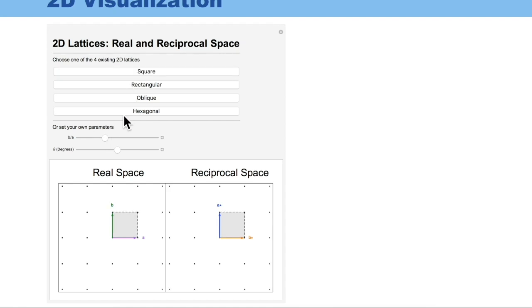As the real unit cell shrinks or expands, the reciprocal unit cell does the opposite. The same holds true as the angles change.